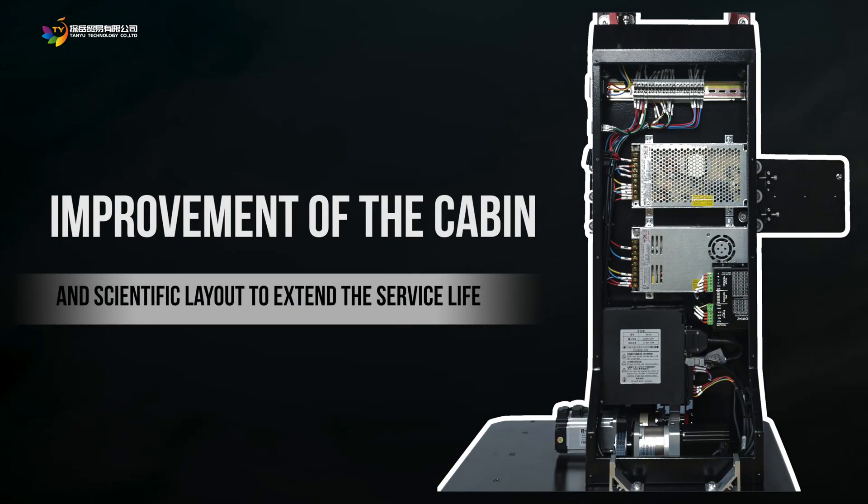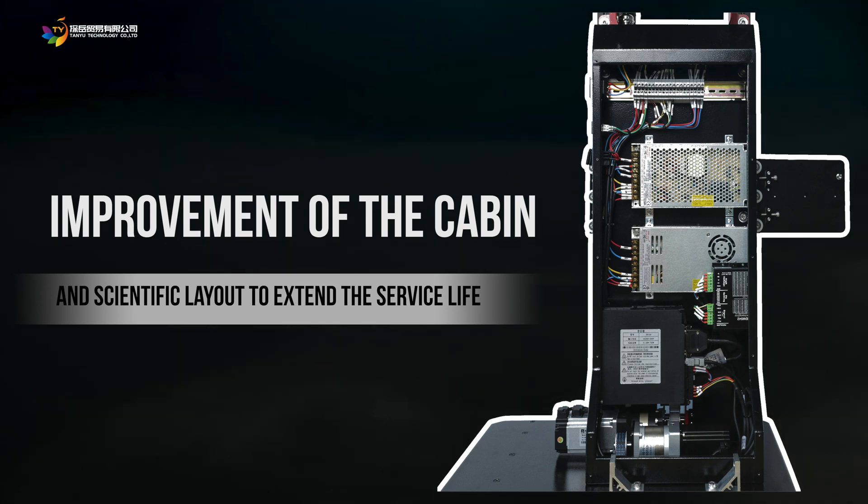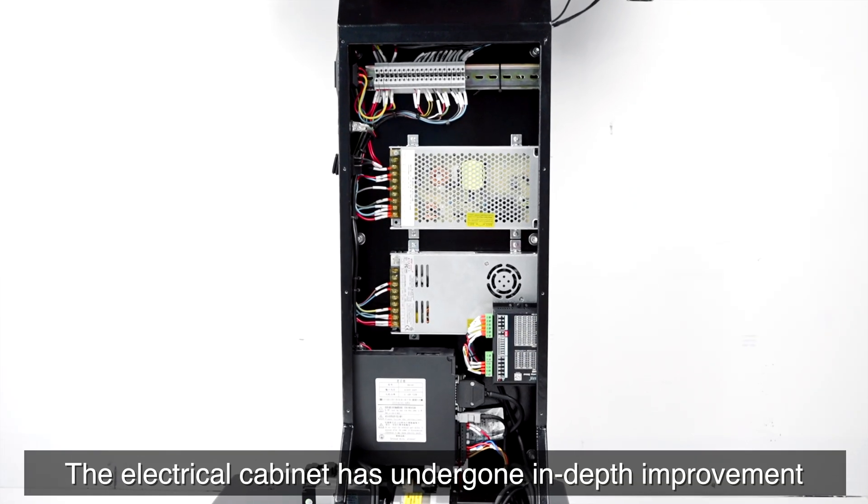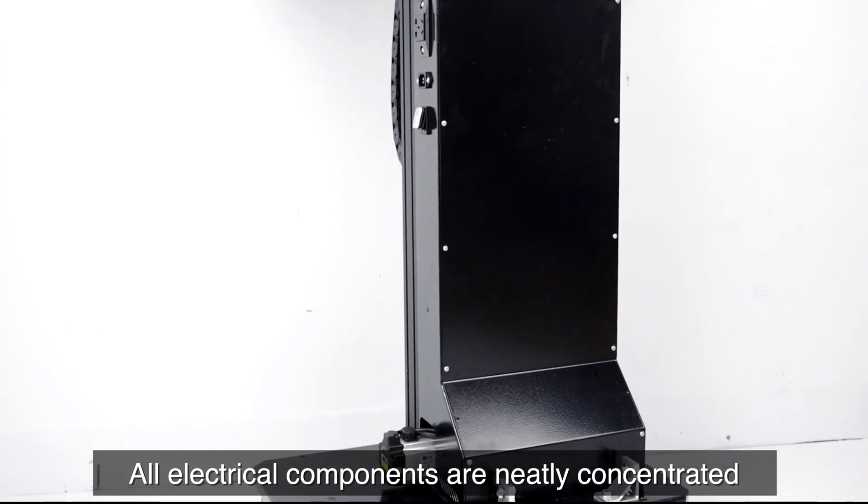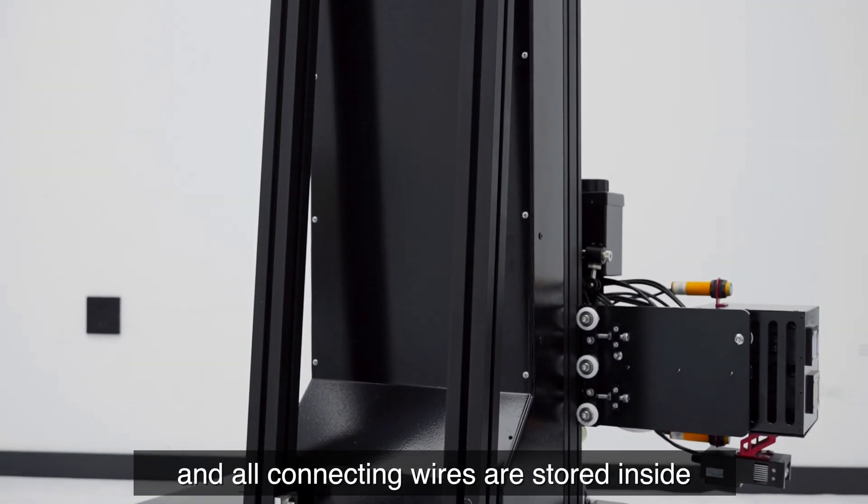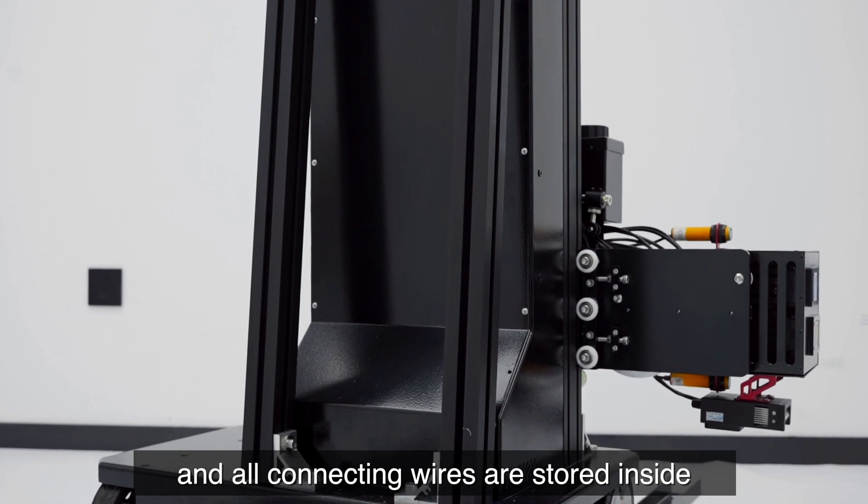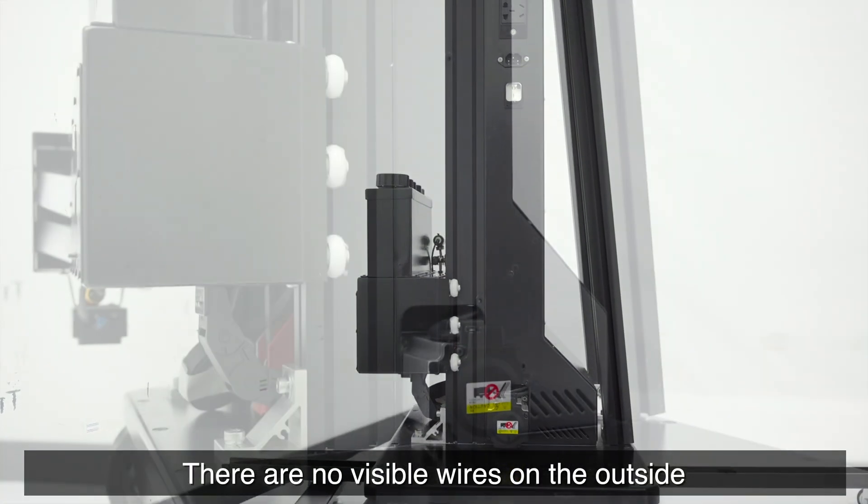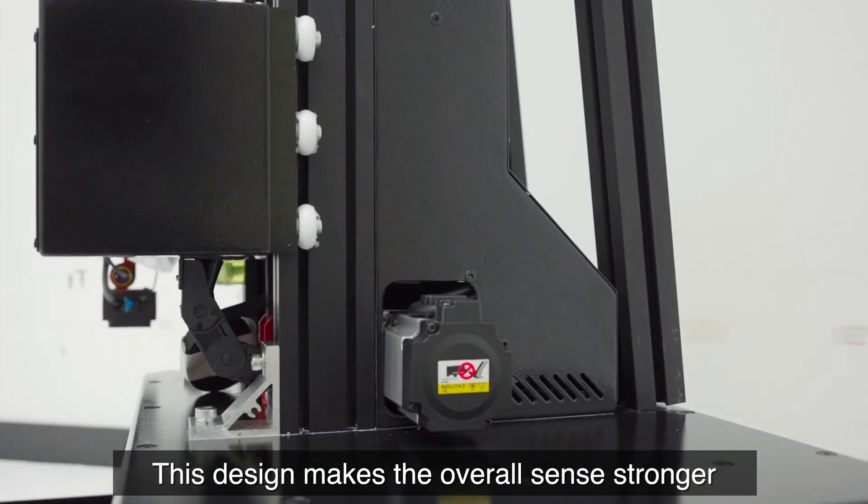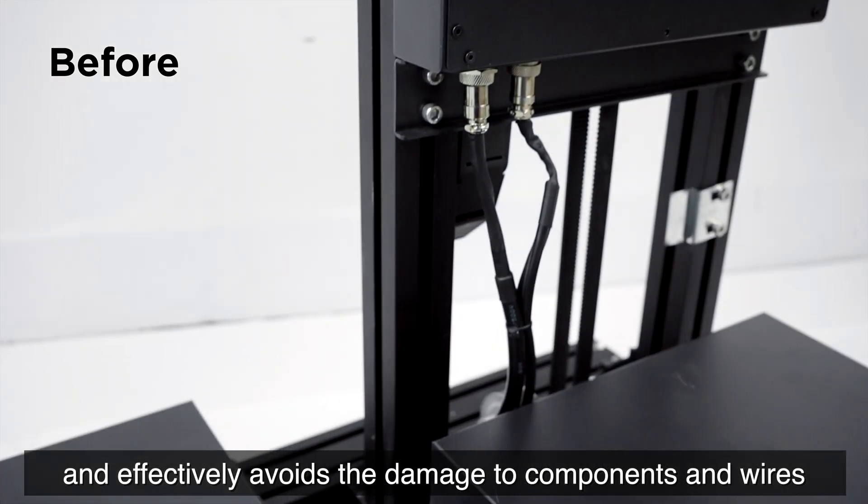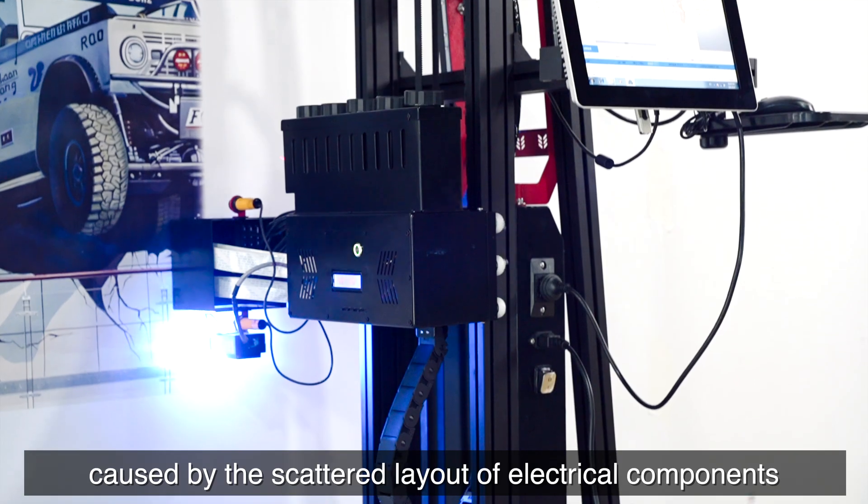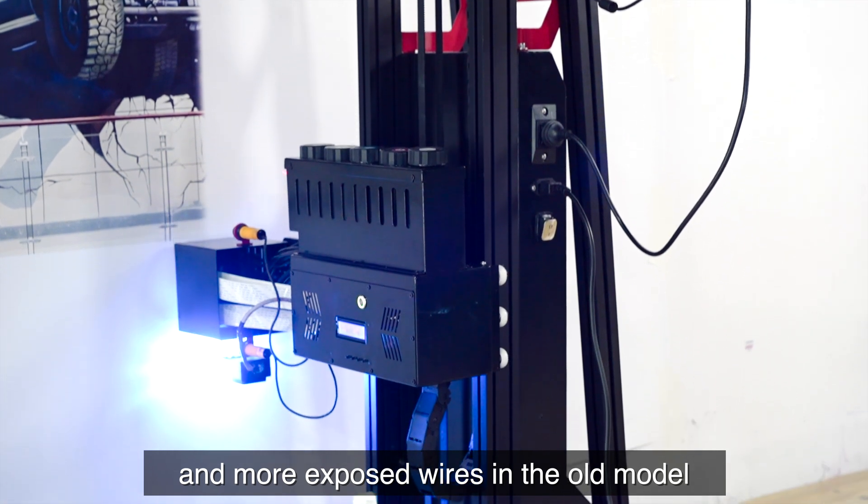Improvement of the Cabin and Scientific Layout to Extend the Service Life. The electrical cabinet has undergone in-depth improvement. All electrical components are neatly concentrated inside the electrical box, and all connecting wires are stored inside. There are no visible wires on the outside. This design makes the overall sense stronger and effectively avoids the damage to components and wires caused by the scattered layout of electrical components and more exposed wires in the old model, prolonging the service life of the equipment.